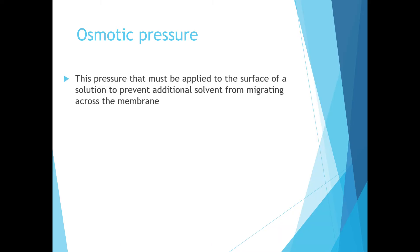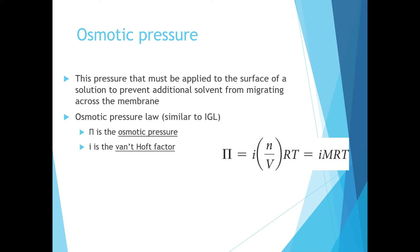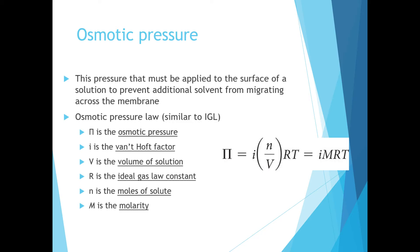To review: osmotic pressure is the pressure that must be applied to the surface of the solution to prevent additional solvent from migrating across the membrane from an area of low concentration to an area of high concentration. We can calculate osmotic pressure using an osmotic pressure law similar to the ideal gas law. The variables include osmotic pressure (capital Pi), the van't Hoff factor, volume of our solution, the ideal gas constant R, moles of solute, molarity, and temperature in Kelvin. Osmotic pressure is a colligative property, meaning it depends on the concentration of our solute, so molarity is an important factor.